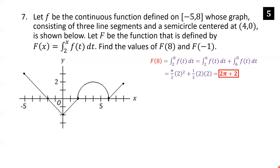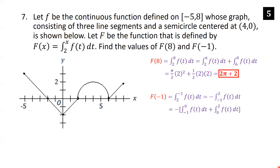F(-1) equals the integral from 2 to -1 of f(t) dt. Since 2 is greater than -1, we flip the integral and negate it: it becomes the negative of the integral from -1 to 2. We split this into the integral from -1 to 0, which is a trapezoid, plus the integral from 0 to 2, which is a triangle.